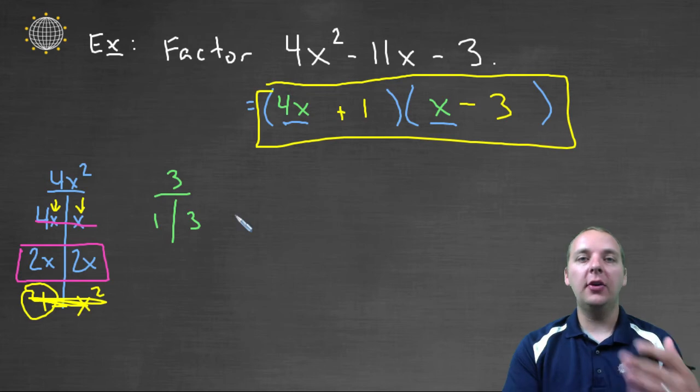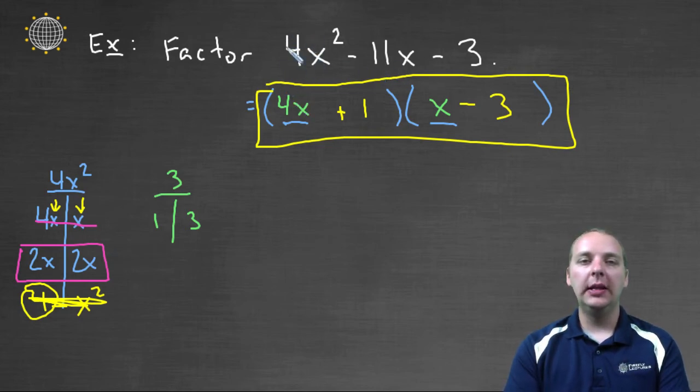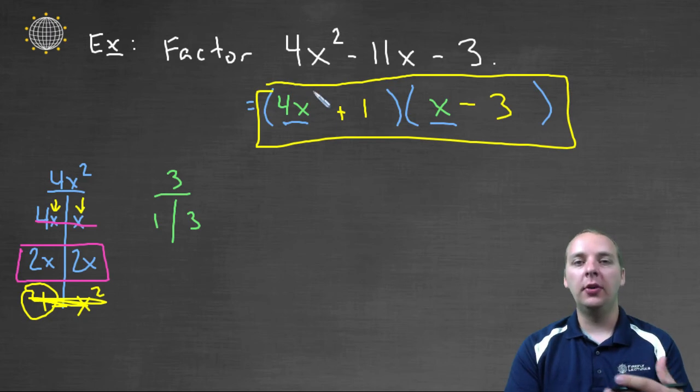And sometimes it doesn't even factor at all, and it's called a prime polynomial. But in any case, this is what we do when we have a trinomial that's a quadratic function with a leading coefficient with something other than one.